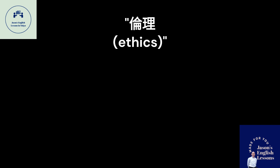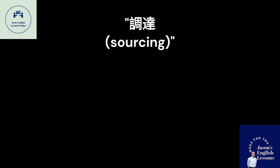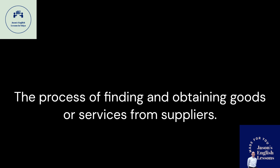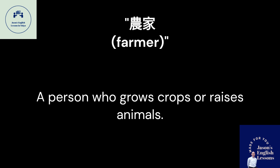Ethics / Moral Principles: Moral principles that govern a person's or group's behavior. Sourcing: The process of finding and obtaining goods or services from suppliers. Farmer: A person who grows crops or raises animals.